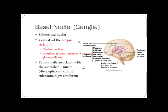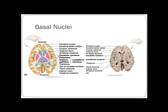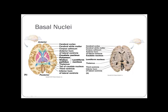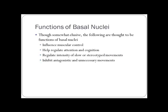The basal nuclei consist of the corpus striatum, which includes the caudate nucleus and the lentiform nucleus. The lentiform nucleus is made up of the putamen and the globus pallidus. Their function isn't 100% known, but they're thought to have some control over muscles and muscular tone, and they help with the intensity of stereotyped movements.